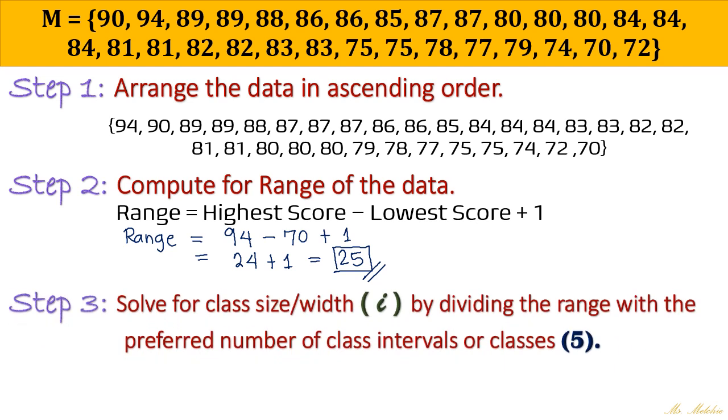Next is solve for the class size or class width or class intervals by dividing the range with the preferred number of class intervals or classes. Okay, so by the way, take note. This preferred number of class intervals or classes is given by your teacher or your classmates. Okay, so take note of that. So this time, let's say the preferred number of class for our FDT later on is 5 only.